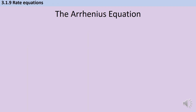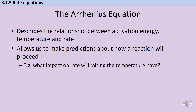Rather than just making a qualitative statement, the Arrhenius equation allows us to say quantitatively what will happen to the rate of reaction as temperature is changed. It's an equation that describes the relationship between activation energy, temperature and rate. This allows us to make predictions not just about changing the temperature, but also about what would happen if we introduced a catalyst and therefore altered the activation energy.